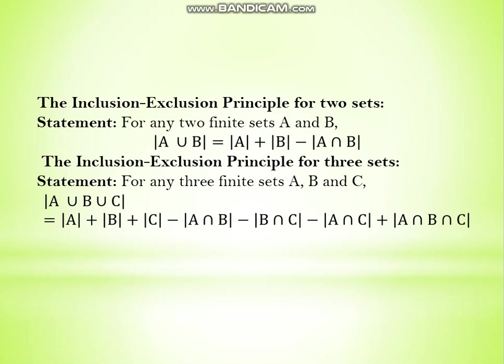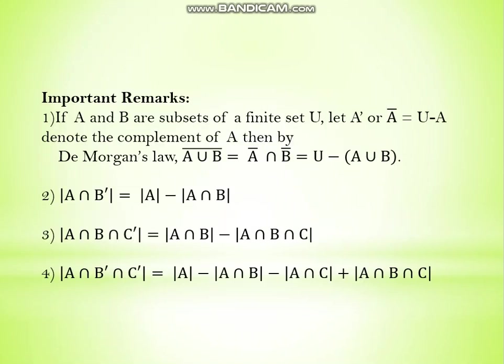To illustrate with our example: set A is the set of people who had vanilla ice cream and set B is the set of people who had mango ice cream. Then the cardinality of A∪B — those who had either vanilla or mango or both — equals cardinality of A plus cardinality of B minus cardinality of A∩B, subtracting those who had both flavors.